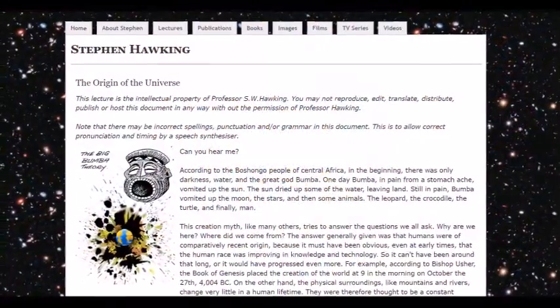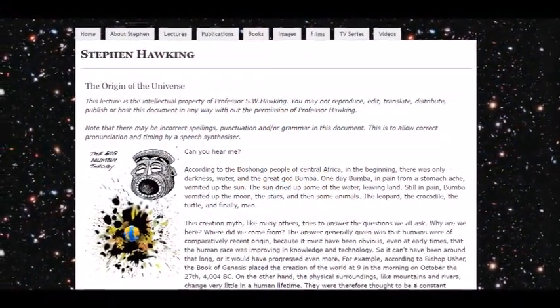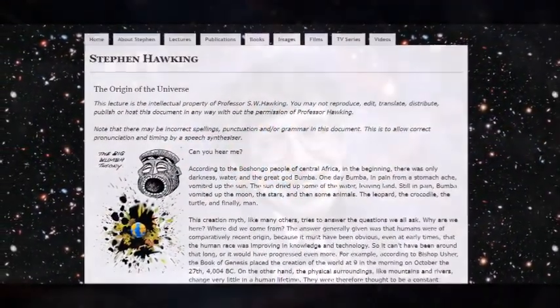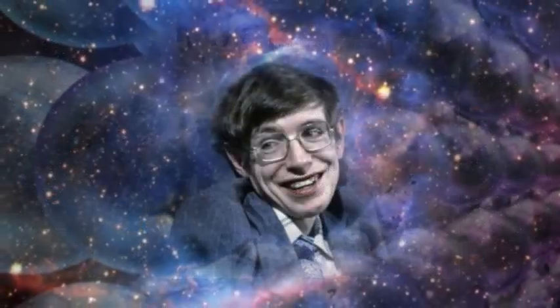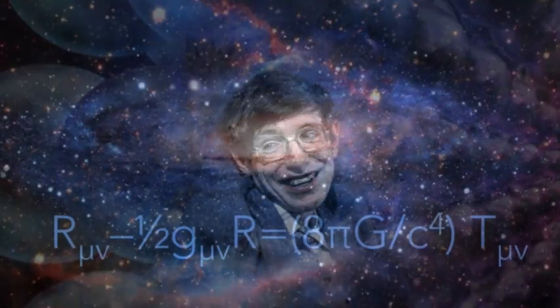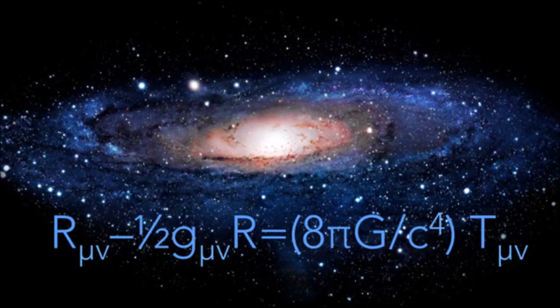Along with being difficult to support, the multiverse theory, which was co-developed by Hawking in 1983, doesn't jibe with classical physics, namely the contributions of Einstein's theory of general relativity as they relate to the structure and dynamics of the universe.